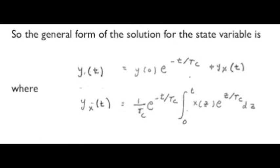In our case, it's the capacitor voltage. Y of zero is the initial value of the capacitor voltage, if any. The function X is the voltage source in the circuit, and that is to say the sinusoidal AC voltage source. The quantity TC is the time constant. In this case, it's the product RC. And Z is a variable of integration.